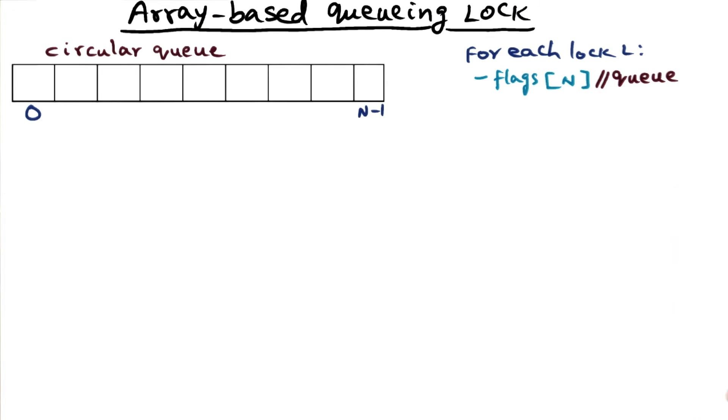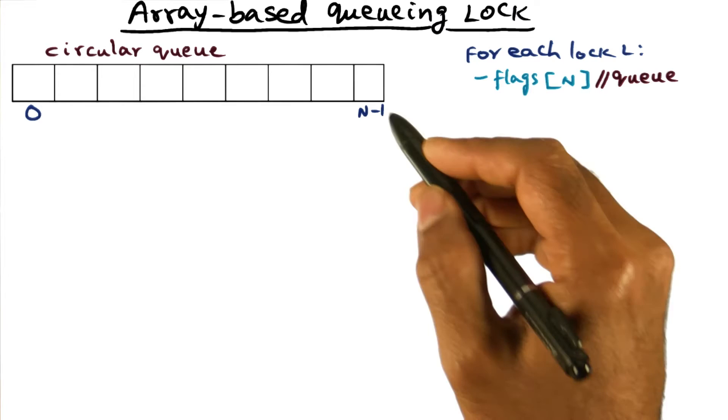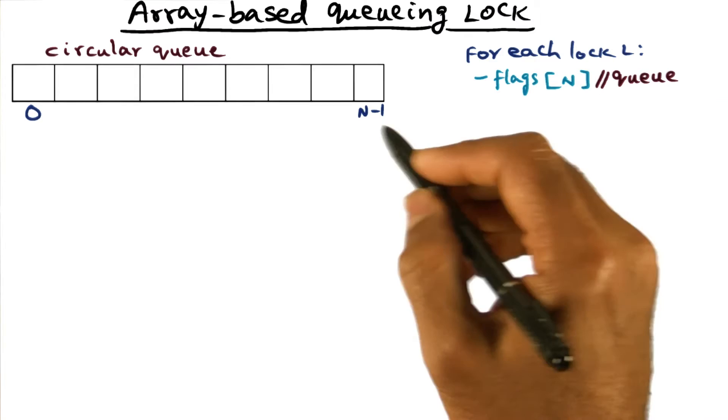It's fairly intuitive that since we have n processors in this multiprocessor, we can have at most n requests simultaneously waiting for this particular lock. So the size of the flags data structure is equal to n, where n is the number of processors in the multiprocessor.